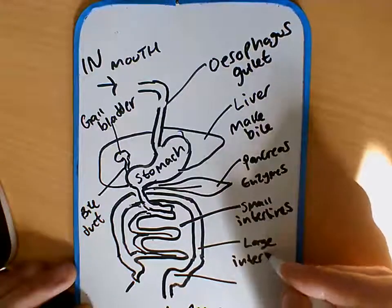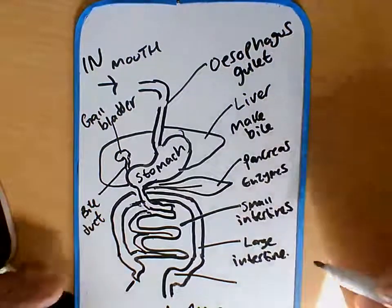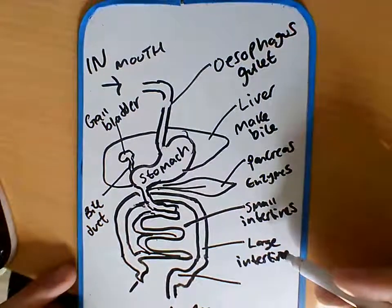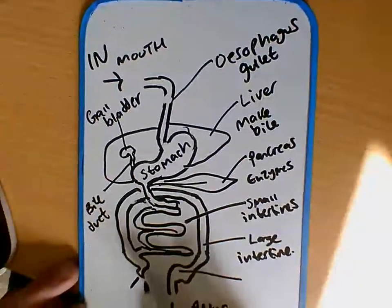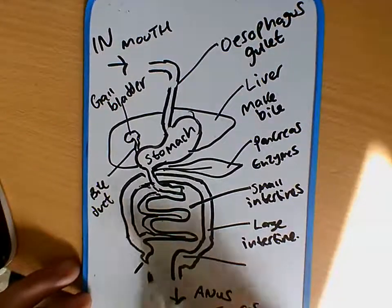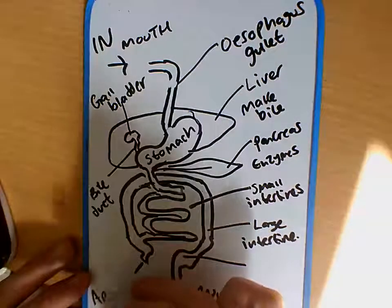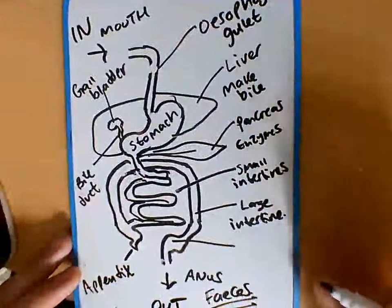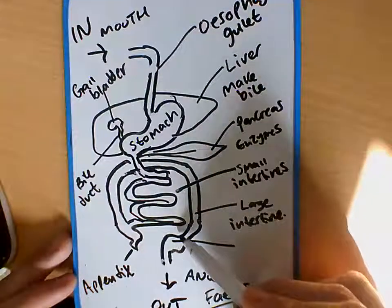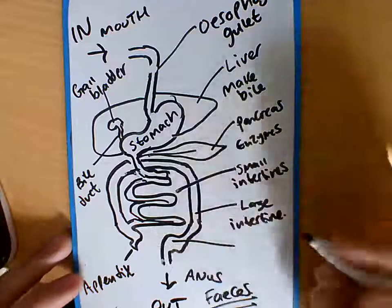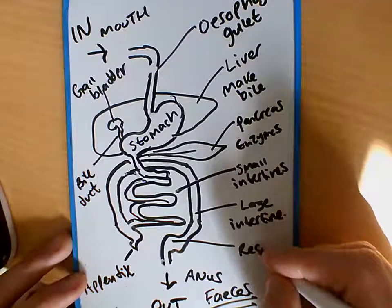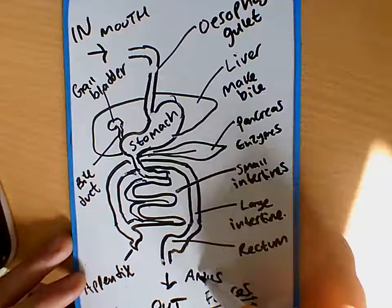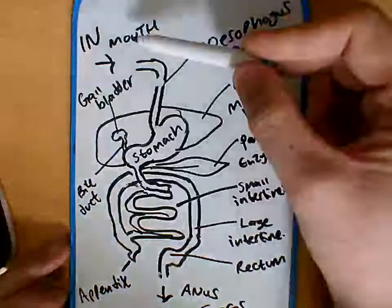The large intestine is larger because it's much wider. Its job is to reabsorb any water and to produce the waste. Just at the end, out of interest, this part of the large intestine is the appendix. Towards the end of the large intestine you've got this rounded area here which is called the rectum, which is where we store the waste.